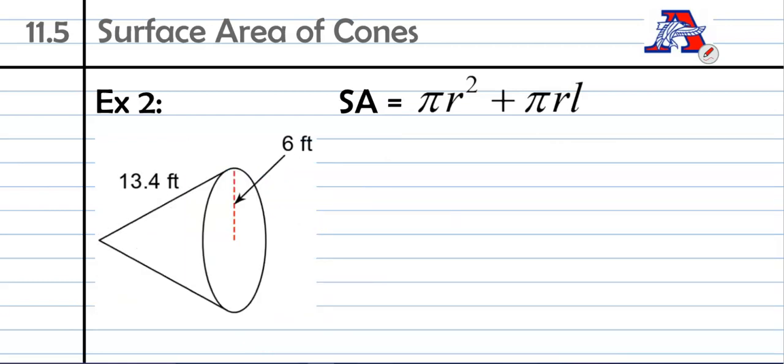One more example - I actually did an easier one here, just one more chance to plug some things in. This time we do have exactly what we were looking for: we have the radius already, we have the slant height already. The only weird thing here is that our cone is kind of flipped on its side.